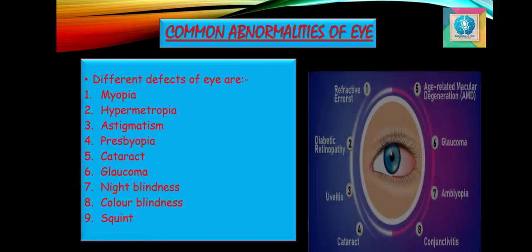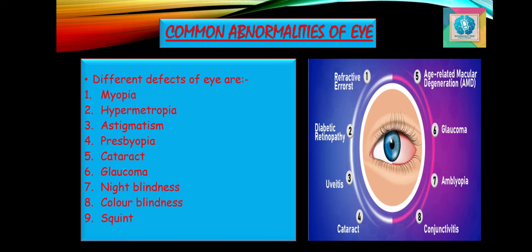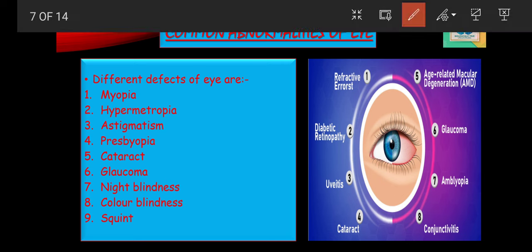Common abnormalities of the eye: the first is myopia, also termed as near or short-sightedness. This is a condition in which near vision is clear while distant vision is blurred. It occurs due to two main reasons: first, the lens becomes too convex or curved; and second, the eyeball is lengthened from front to back. This defect can be corrected by wearing a concave lens, and the power of the glasses used is mentioned in the minus.